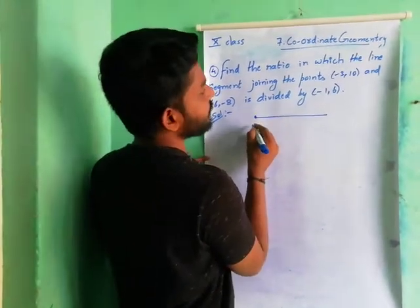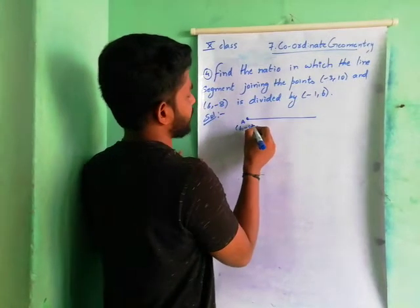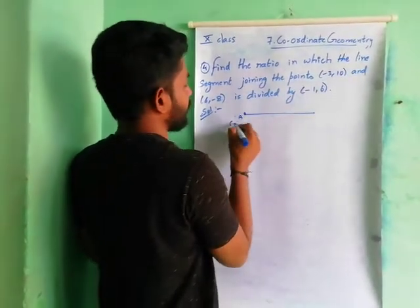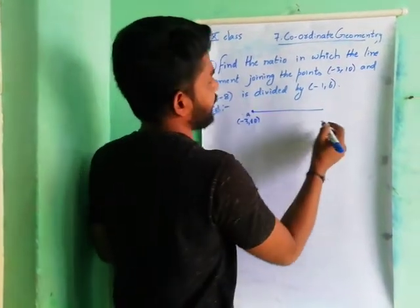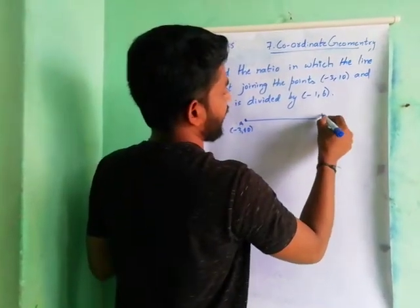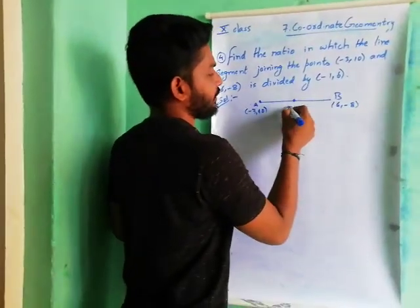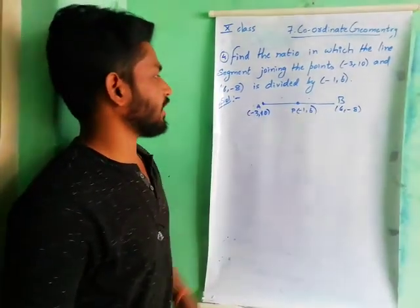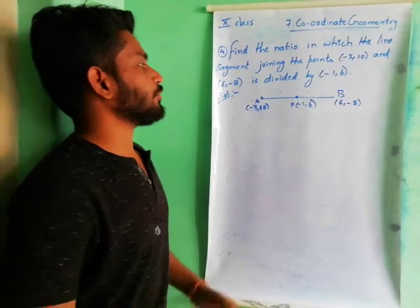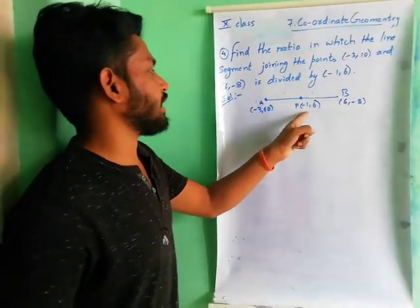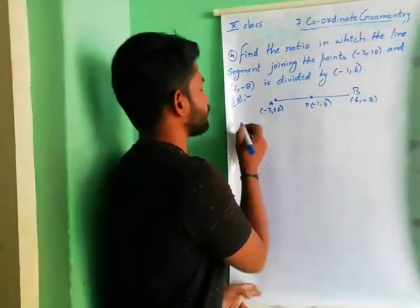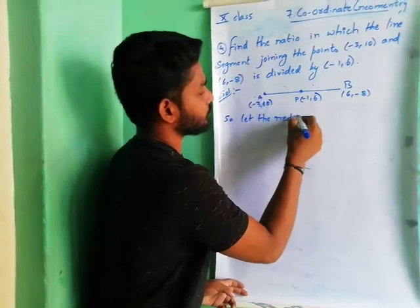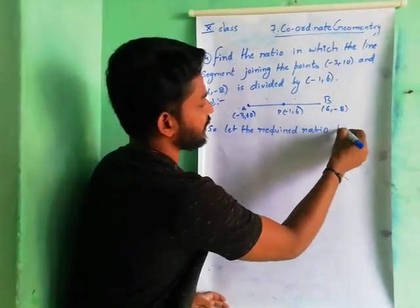The line joining points A(-3, 10) and B(6, -8) is divided by the point P(-1, 6). We have to find out the ratio. Since the ratio is not given, we always consider the ratio to be of the form K is to 1.